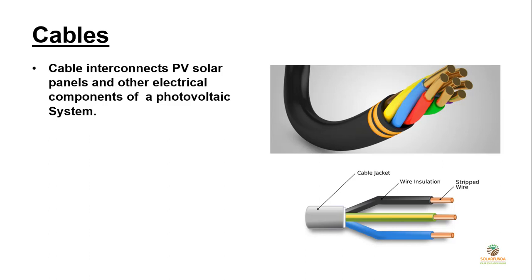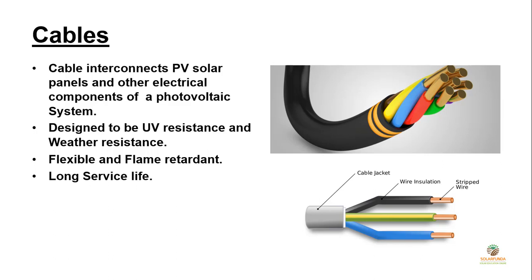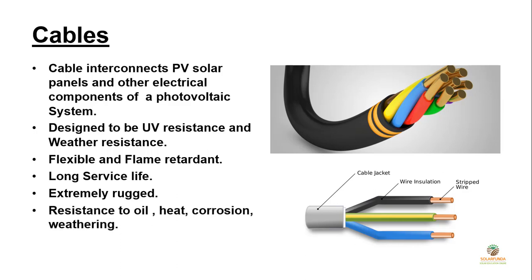You can find cables and wires everywhere because electricity has reached every corner of your house. Talking about the properties of cables used in solar PV systems: cables should be designed to be UV — that is ultraviolet radiation — and weather resistant. Cables should be flexible and flame retardant. They should have a long service life, must be extremely rugged, and should be resistant to oil, heat, corrosion, and weathering. These properties are required because generally solar cables are laid outside.